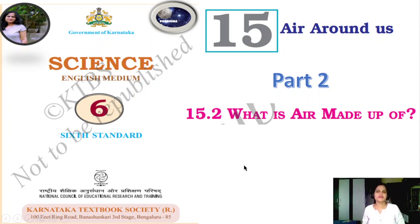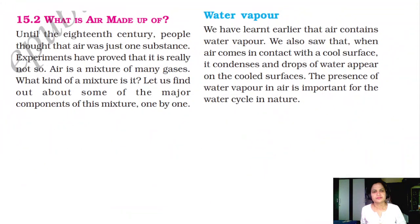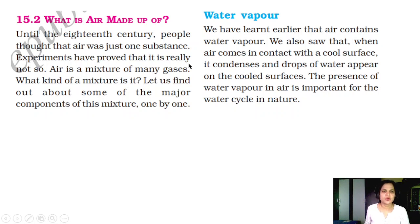Welcome to Science 6, Standard 15th Chapter, Air Around Us Part 2 - Section 15.2: What is air made up of? Until the 18th century, people thought that air was just one substance. Experiments have proved that it is really not so. Air is a mixture of many gases. Let us find out about some of the major components of this mixture one by one.